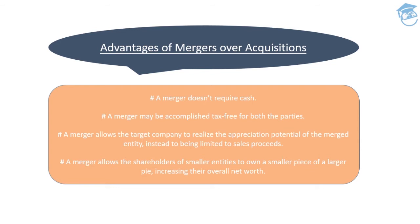Number four: a merger allows the shareholders of smaller entities to own a small piece of a large pie. Suppose a company has a turnover of just one thousand crores, but merges with a company having a turnover of fifty thousand crores with very good profit potential. The shareholders of the smaller entity get an opportunity to own a smaller piece of that larger pie, which will increase their overall net growth. That is the beauty of mergers.